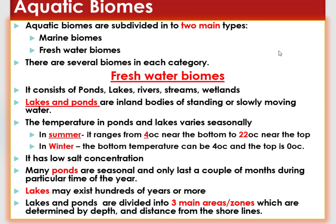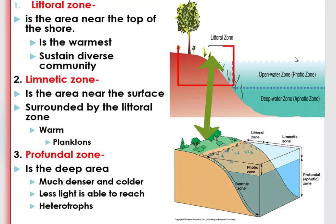Lakes and ponds are divided into three main areas or zones, which are determined by depth and distance from the shorelines. The first zone is the littoral zone, which is the area near the top of the shore. This zone is the warmest since it is shallow and absorbs more of the sun's energy. The littoral zone sustains a highly diverse community of organisms which include algae, rooted and floating aquatic plants, snails, insects, crustaceans, fishes, and amphibians.